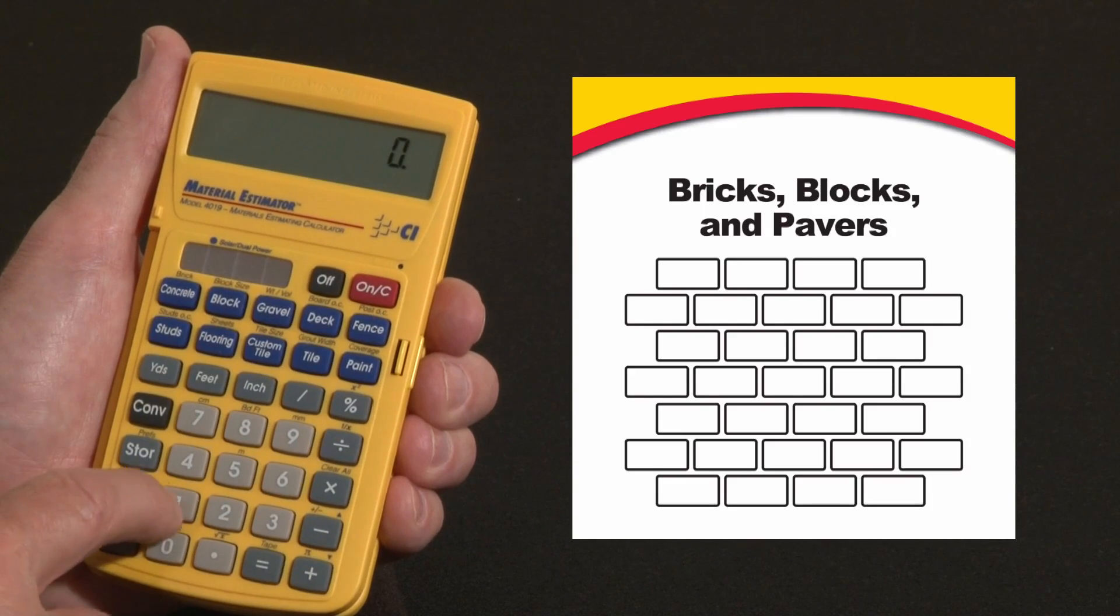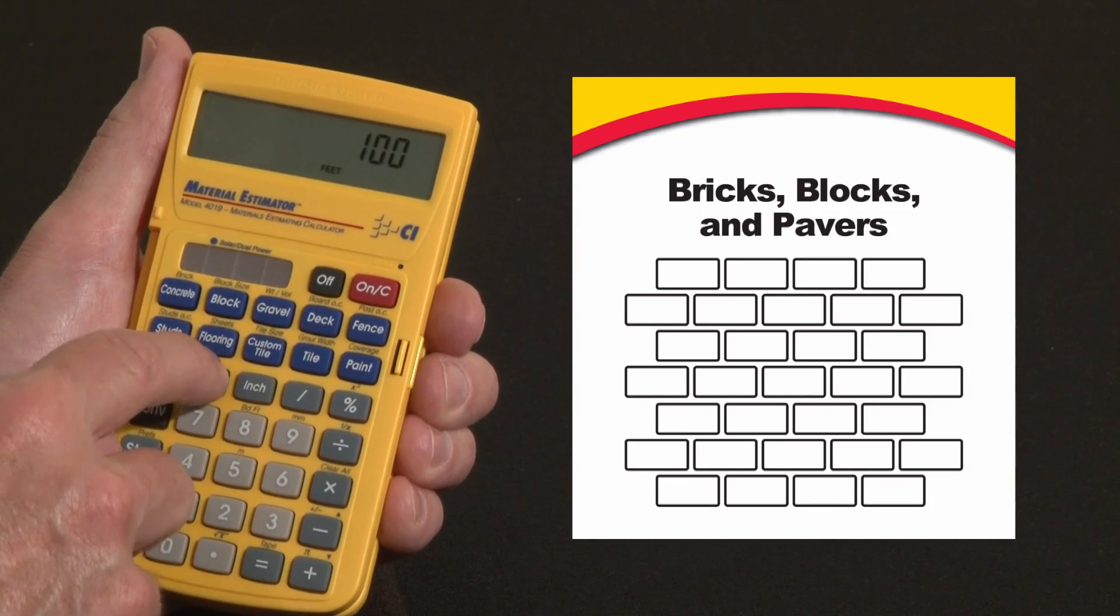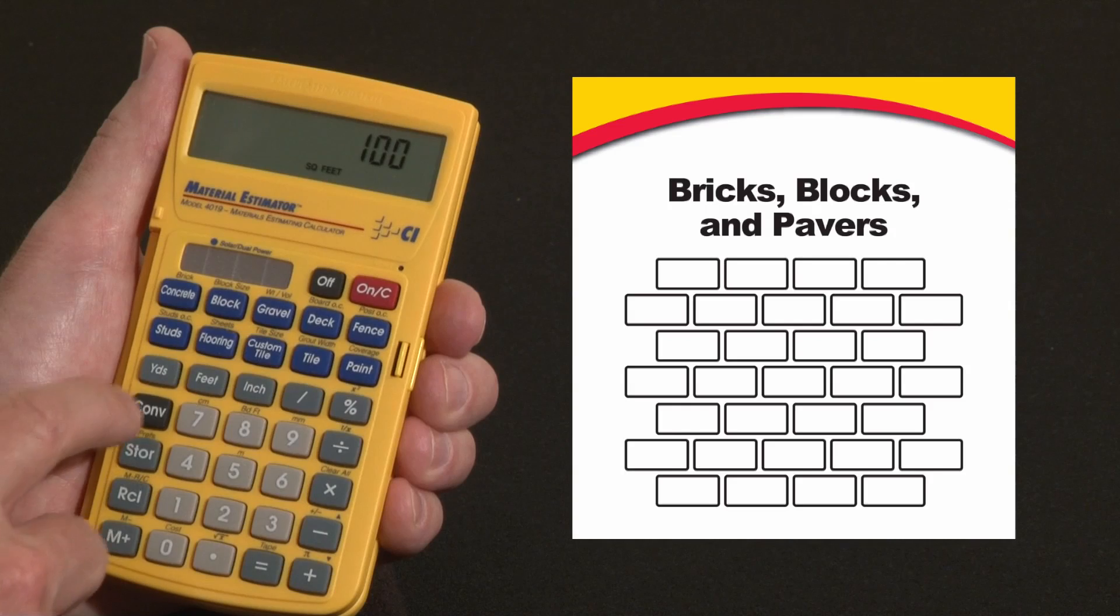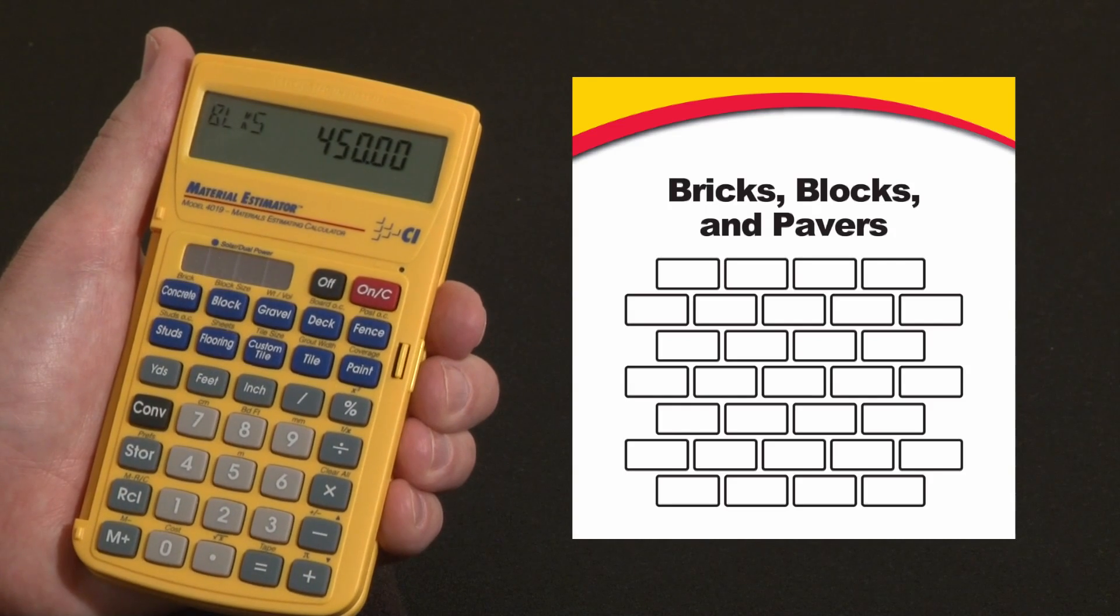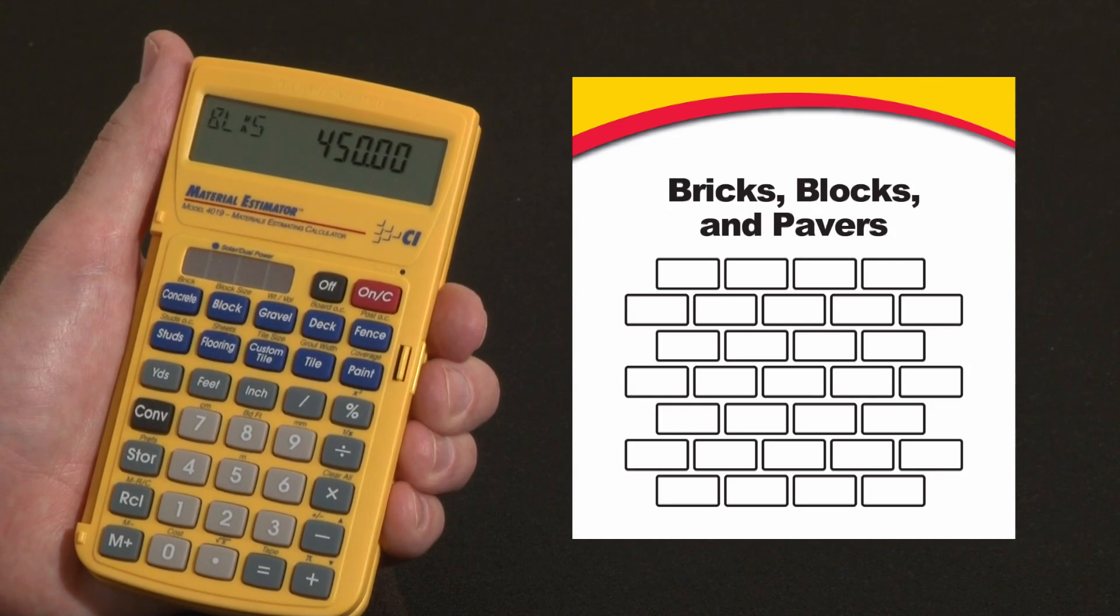So now when we have a 100 square foot patio, 100 square feet, second press makes it square feet, hit convert to blocks, we need 450 of those 4x8 inch bricks for that.